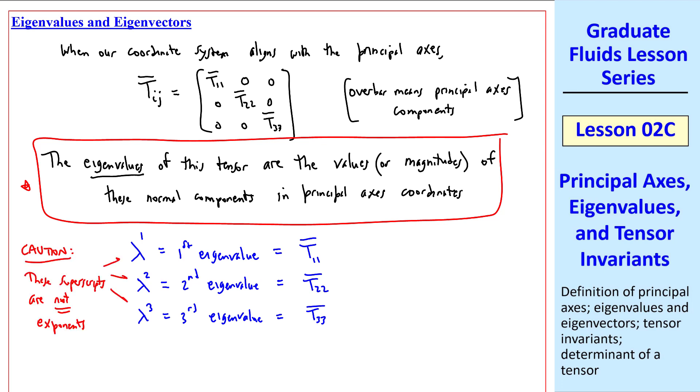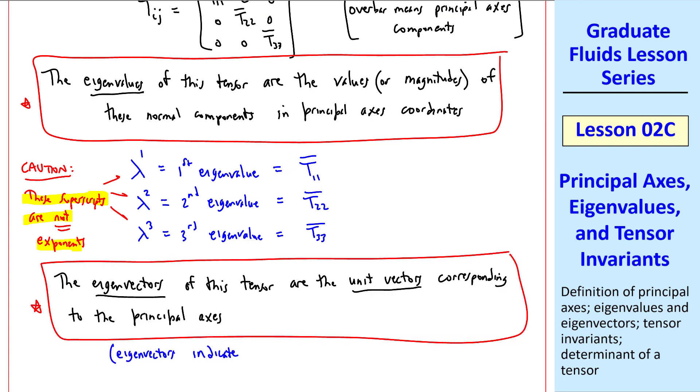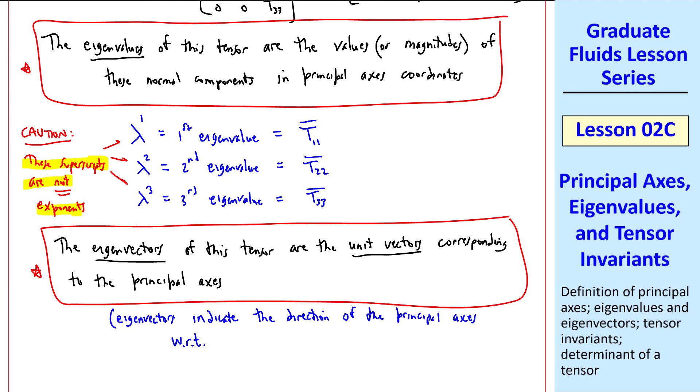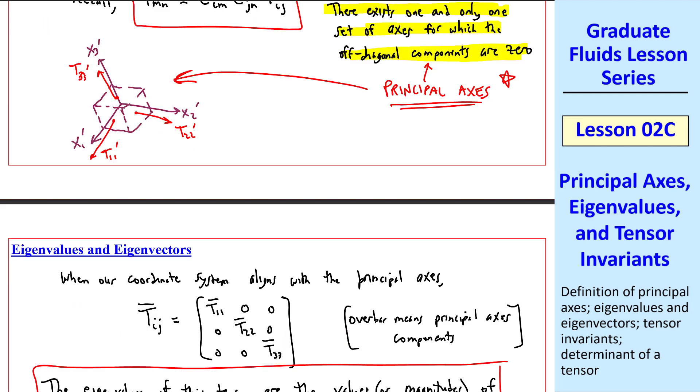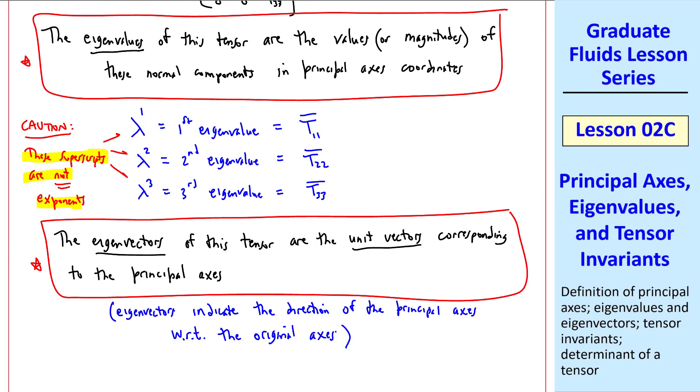Different textbooks use different notations. The one we'll adopt here is lambda. Lambda to the superscript 1 is the first eigenvalue. It's defined as T11 bar, this component. Similarly, the second eigenvalue is T22 bar, and the third eigenvalue is T33 bar. Caution! These superscripts are not exponents. This is not lambda to the 1, lambda squared, and lambda cubed. They just indicate the three different eigenvalues. What are eigenvectors? The eigenvectors of this tensor are the unit vectors corresponding to the principal axes.